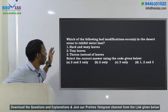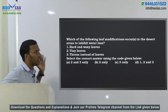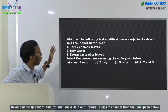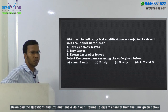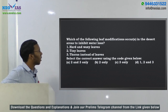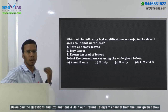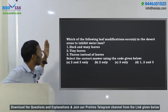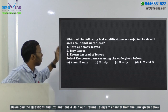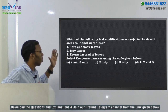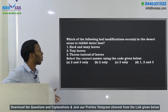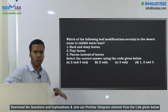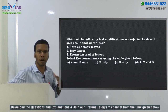This is the first question in the UPSC prelims examination and it is related to vegetation. Which of the following leaf modifications occurs in desert areas to inhibit water loss? The options given are hardened waxy leaves, tiny leaves, and thorns instead of leaves. We need to know which of these are leaf modifications in order to reduce or avoid water loss in desert plants.